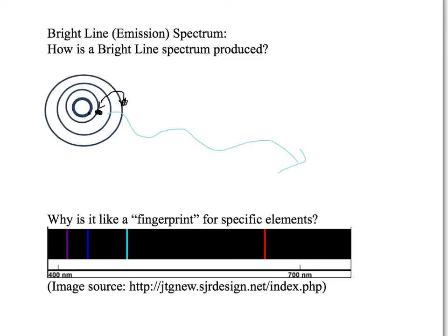That wavelength that's being released is going to be associated with a specific color on the bright line spectrum, and that's how a bright line spectrum is produced.